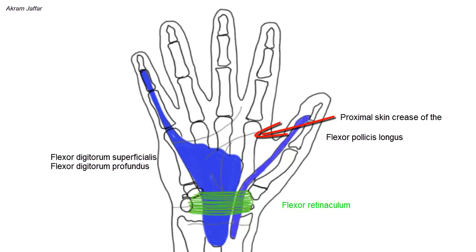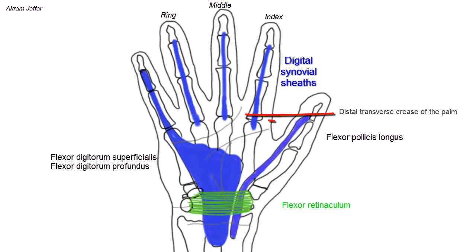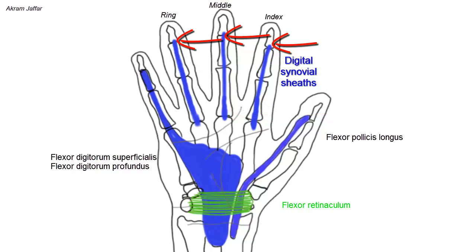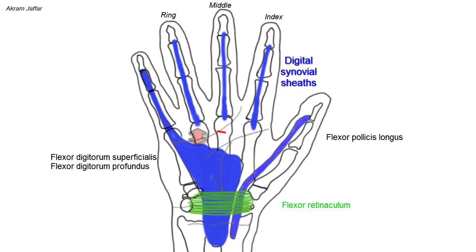The distal ends of the flexor tendons in the index, middle, and ring fingers have digital synovial sheaths which start at the level of the distal transverse crease of the palm and end at the bases of the distal phalanges. Thus, for a short length, the tendons for the index, middle, and ring fingers are devoid of synovial covering. It is from this situation that lumbricals arise from the tendons of flexor digitorum profundus, with the fourth lumbrical partly obliterating the sheath along its origin from the tendon of the little finger.